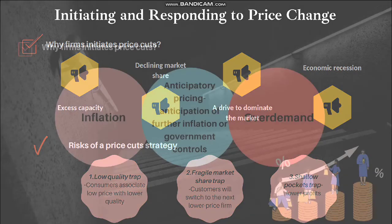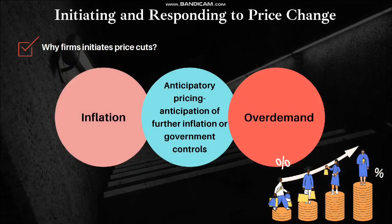Now we discuss why firms initiate price increases. First is due to inflation — a general increase in prices and fall in the purchasing value of money. Second is anticipatory pricing, which is the practice of setting a somewhat higher price than would otherwise have been chosen, in expectation of cost inflation, government price controls, or similar environmental circumstances.